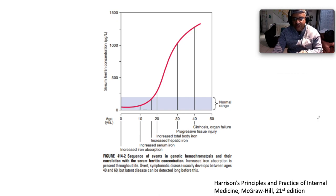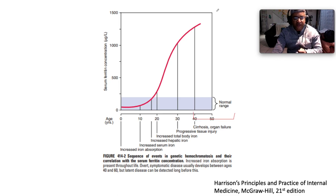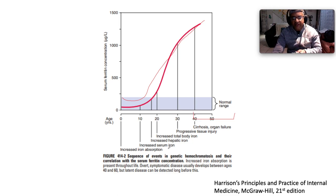Here is the sequence of events in genetic hemochromatosis and its correlation with serum ferritin concentrations. Increased iron absorption is present throughout life, but overt symptomatic disease usually develops between the ages of 40 and 60. Early on we see increased iron absorption, increased hepatic iron, increased serum iron, and increased total body iron, which become clinically manifested between ages 40 and 60 with progressively rising serum ferritin.